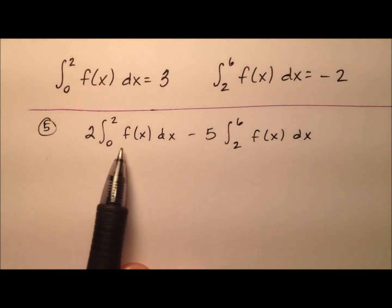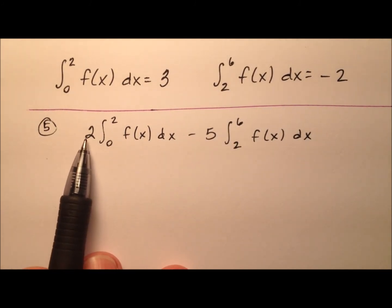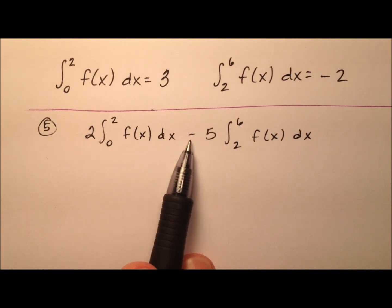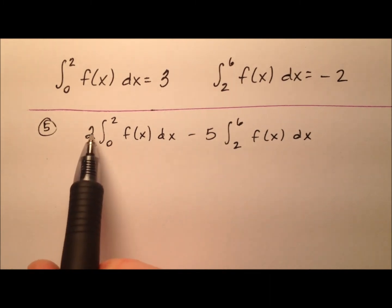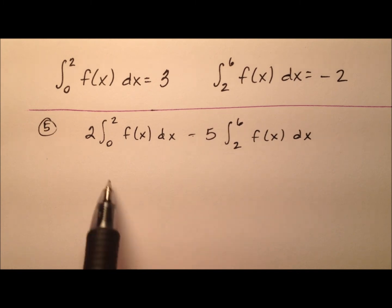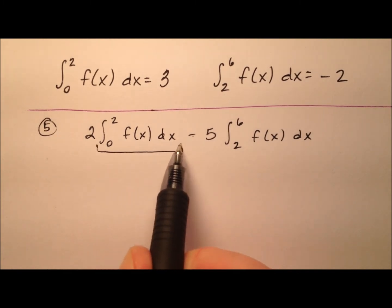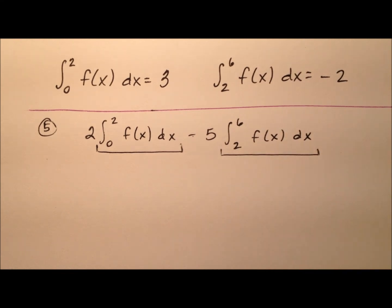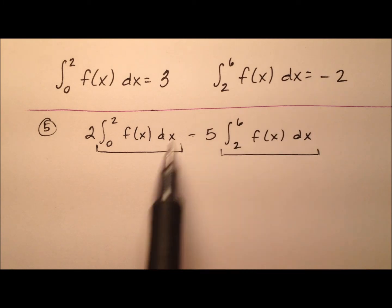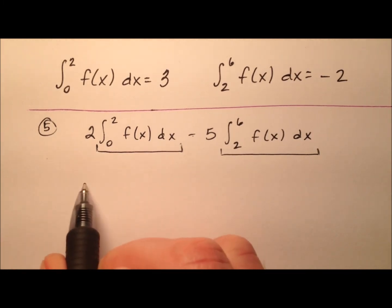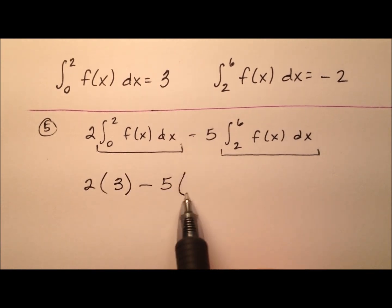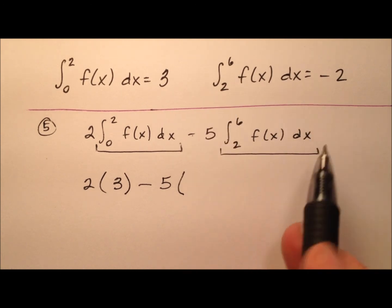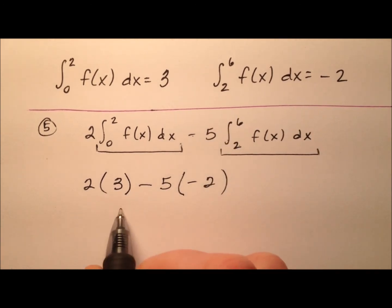In our fifth and final example, we're evaluating 2 times the integral from 0 to 2 of our function minus 5 times the integral from 2 to 6. The 2 and negative 5 are constants, so once we find the values of these integrals, we multiply them by the constants. These values are given in our definitions: 2 times 3 minus 5 times negative 2, which gives us 6 plus 10, which equals 16.